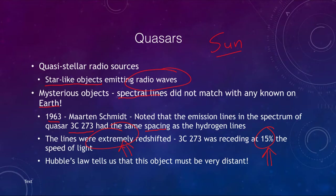That is much faster than any star is moving and much faster than the galaxies that had been seen at the time were moving. If we use Hubble's law, which says that velocity is related to Hubble's constant times the distance, that means this object must be extremely far away to be receding at such a great speed.